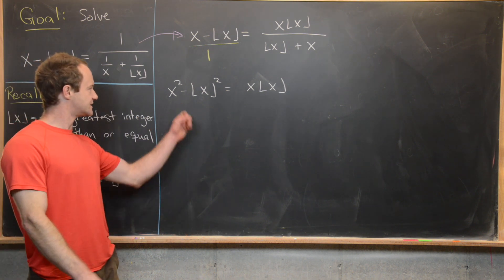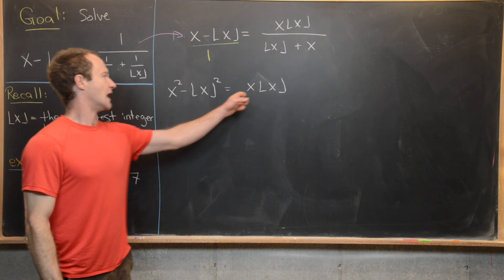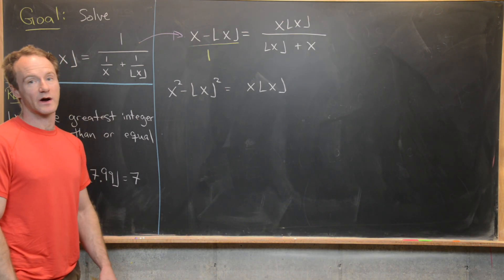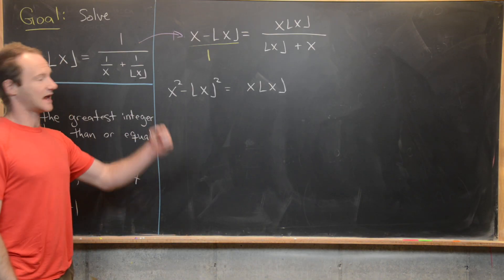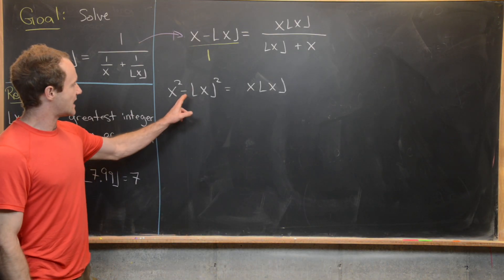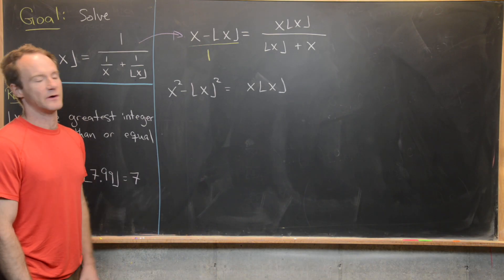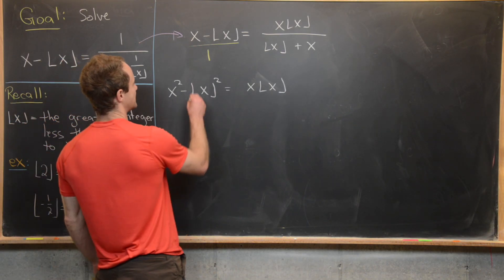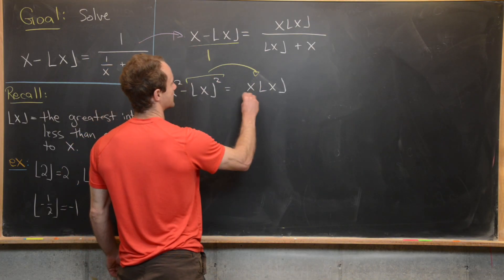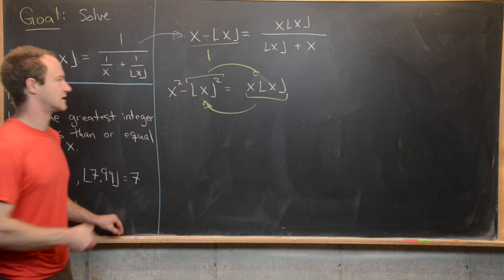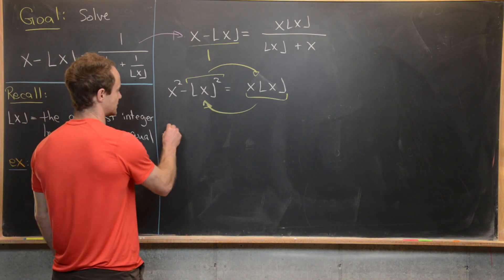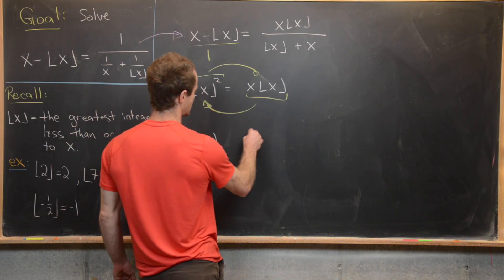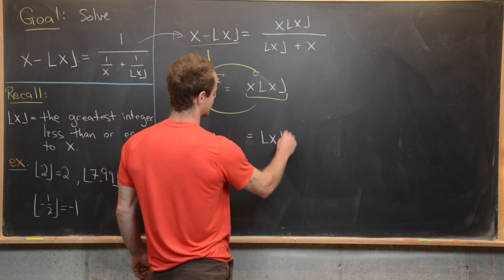We've got an x squared term and an x·floor(x) term, which motivates completing a square binomial involving x and floor(x). But it won't work with a minus floor(x) squared; we need a plus floor(x) squared. So we rearrange: move floor(x) squared to the right and x·floor(x) to the left, leaving x squared minus x·floor(x) equals floor(x) squared.